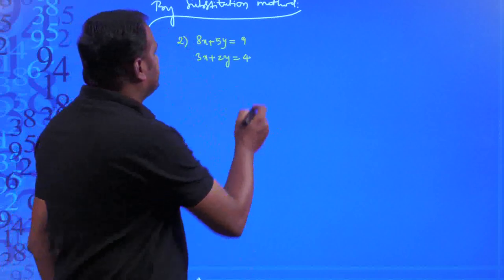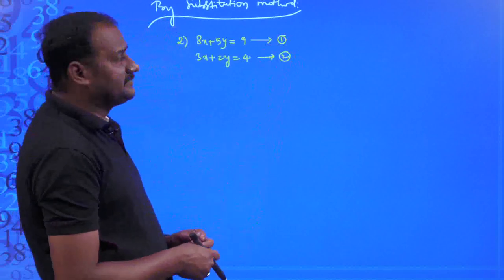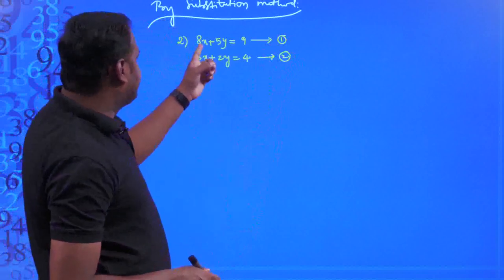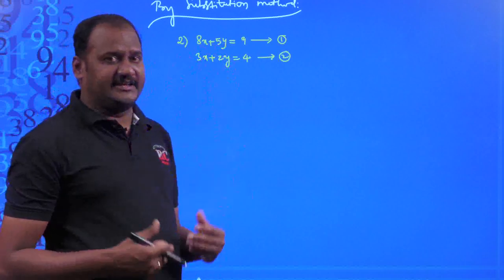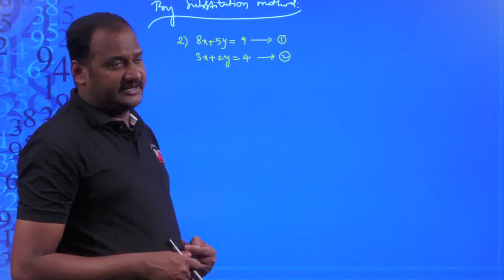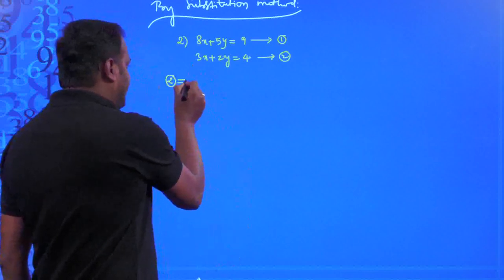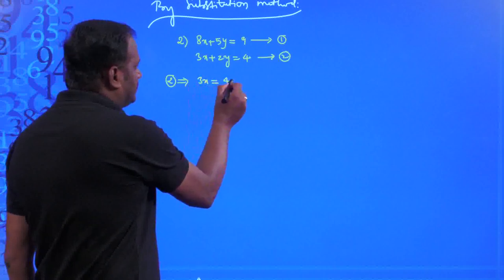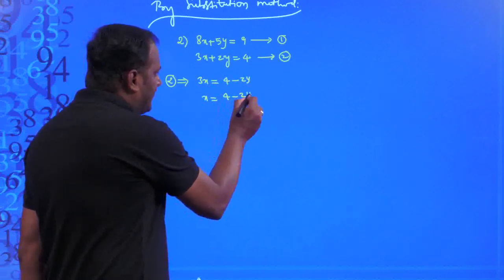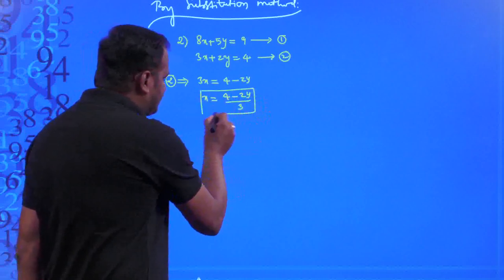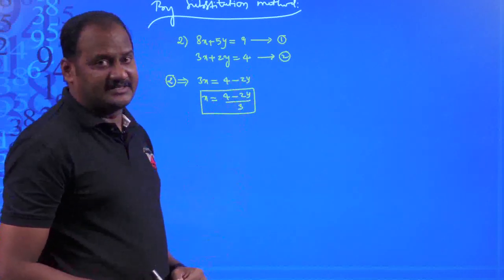Now, find the value of one variable. Comparing coefficients: 8x and 3x, 5y and 2y — 3 is smaller than 8, and 2 is smaller than 5. I choose the 3x term to obtain x from the second equation. The second equation gives 3x = 4 − 2y, so x = (4 − 2y)/3. Now substitute x = (4 − 2y)/3 into the first equation.